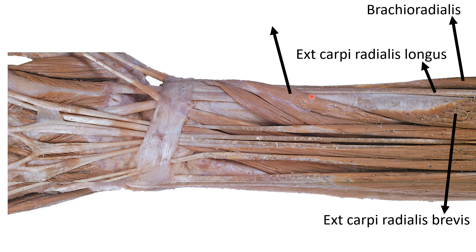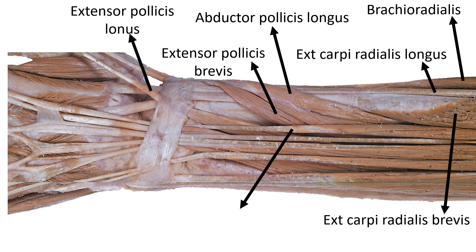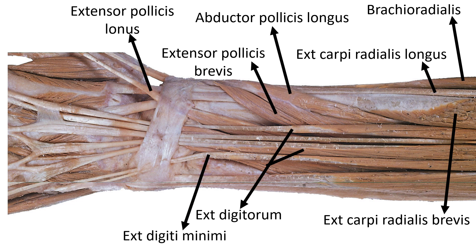At the lower aspect, the two tendons — extensor carpi radialis longus and extensor carpi radialis brevis — along with brachioradialis, are crossed by three tendons. The first is abductor pollicis longus, then extensor pollicis brevis, then medial to that we can identify extensor pollicis longus. Medial to the extensor pollicis longus tendon we can identify the extensor digitorum tendons — four extensor digitorum tendons. Then most medially we can identify extensor digiti minimi and extensor carpi ulnaris.